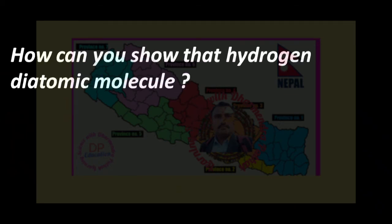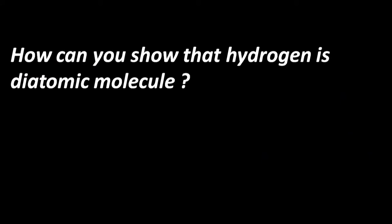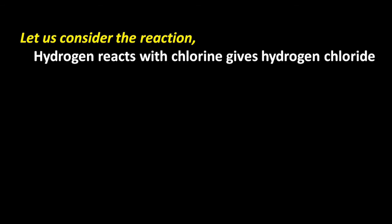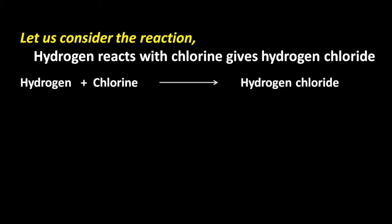How can you show that hydrogen is a diatomic molecule? Let us consider the reaction: hydrogen reacts with chlorine to give hydrogen chloride. The balanced chemical equation can be written as H2 + Cl2 → 2HCl.